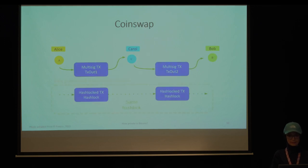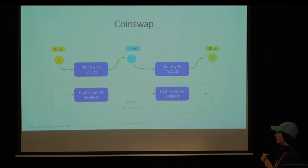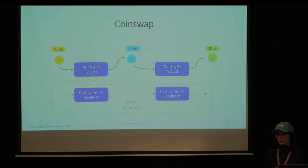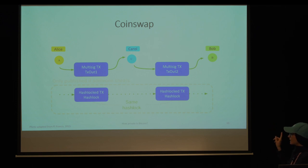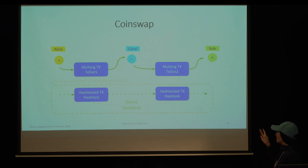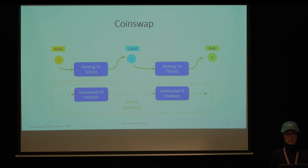The third category is CoinSwap. In CoinSwap, for instance, Alice pays to Bob via intermediary Carol. It requires four transactions in total: two multi-signature payment transactions and two hash-lock transactions. The payment is made via multi-signature transactions where both users must provide their signatures, and in case of cheating, users are able to unlock the coins via the hash-lock transactions by providing the pre-image of the hash.